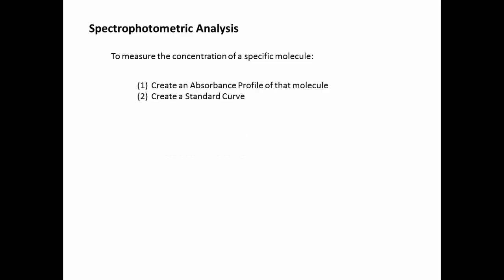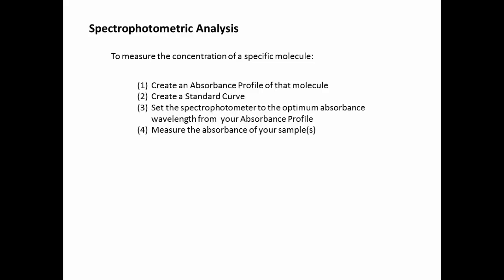Two, you must create a standard curve. Three, set the spectrophotometer to the optimum absorbance wavelength and you get this value from your absorbance profile that you make, or that you can look up. You must also then measure the absorbance of your samples and record this data. Finally, you're going to use the absorbance data and determine the concentration of each sample using the standard curve that you made in step two.